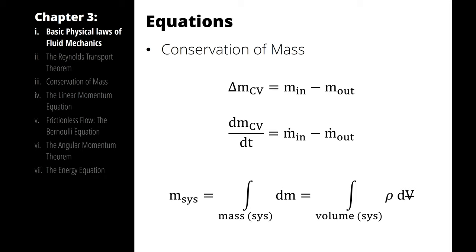So instead of writing mass entering and mass exiting, we are going to write the mass of our system as the integral of dm across our mass of system, which isn't particularly helpful, but what is helpful is writing the mass as the integral of density with respect to volume. If density is constant, it comes out, but if density changes with respect to volume, then writing it as an integral across the volume will account for that.